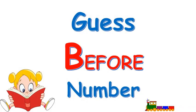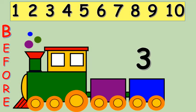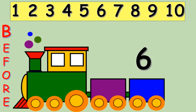Now I'll be showing you a number and you have to find the before number. Let's start the guessing game! Here we have number three — can you find the before number? What number comes before three? Yes, it's two that comes before three. Here we have number six — can you guess what number comes before six?